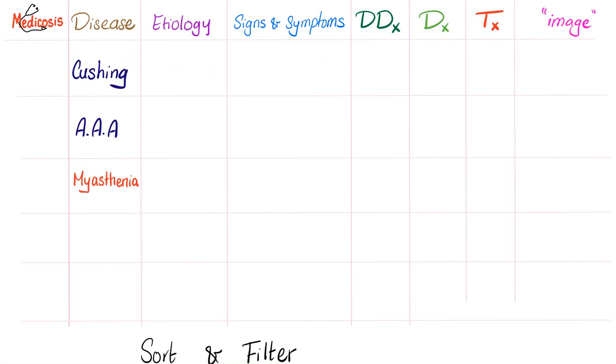Write the disease, the etiology, signs and symptoms, differential, diagnosis, treatment, and add an image. Cushing disease, I'll add an image about someone who's obese and has Cushing. Abdominal aortic aneurysm, mycelia, etc. In medicine, there is about 14,000 diseases. If you can just remember 1,000, you will be at Dr. House level.